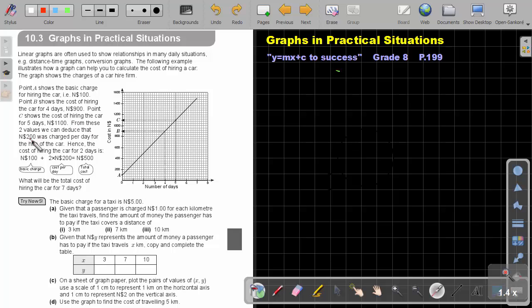So from these two values, we can deduce that $200 was charged per day for the hire of the car. Because between day 4 and 5, it's one day. And the difference between $1,100 and $900 will be exactly $200. So that is the cost per day for hiring the car.